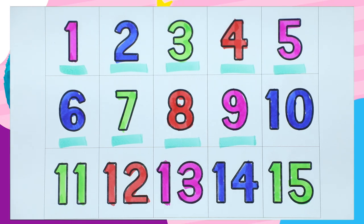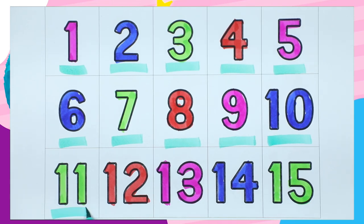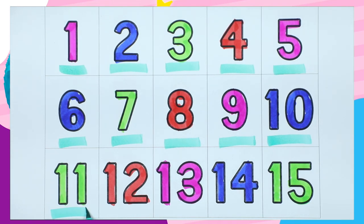One zero, ten. It's blue color. One one, eleven. Which color is this? Green. One two, twelve. It's red...